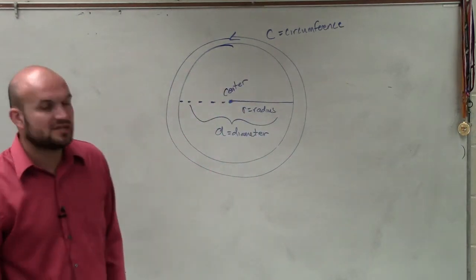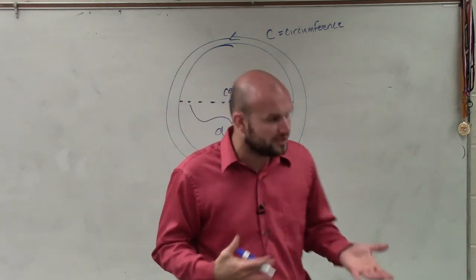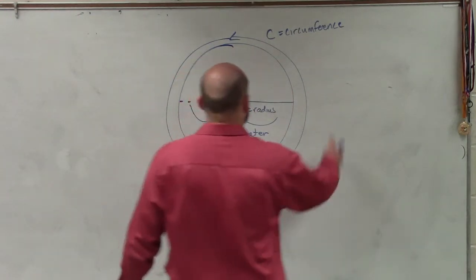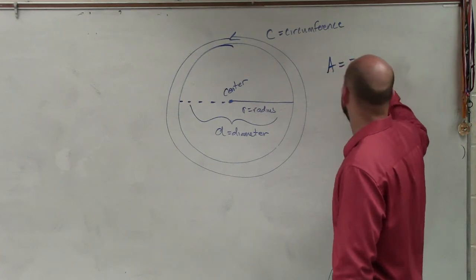So let's just go through some of the basic formulas of a circle that is kind of review, but I want to make sure at least I go over them so you guys have. First of all, the area equals pi r squared.